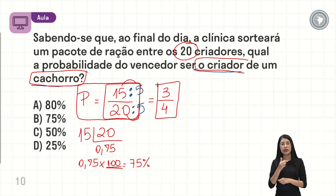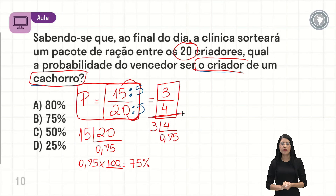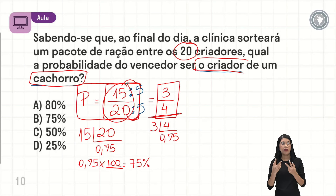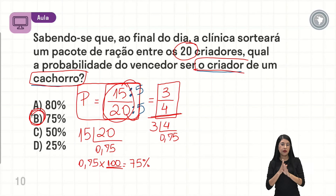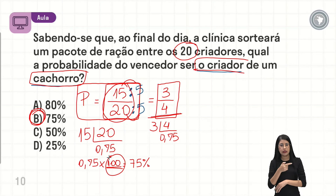As duas representam a mesma quantidade. Se a gente fizer a divisão 3 dividido por 4, também vai dar 0,75. Só que a fração 3 sobre 4 está escrita na forma irredutível — é a menor representação da fração 15 sobre 20, mas significa a mesma quantidade. O nosso problema está em percentual, então a gente chegou na resposta fazendo a divisão e multiplicando por 100, chegando nos 75%.